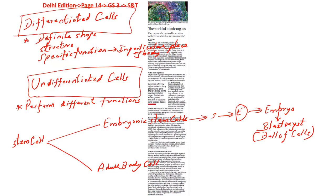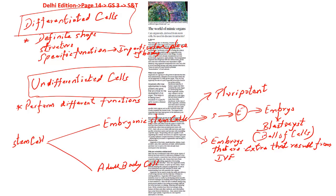Embryonic stem cells come from a blastocyst that is 4 to 5 days old. When scientists take these stem cells from embryos that are usually extra — as a result of in vitro fertilization — these embryonic stem cells are pluripotent. 'Pluri' stands for several and 'potent' stands for ability. A pluripotent cell is one able to effectively perform different tasks and can turn into more than one type of cell. Stem cells can also be extracted from adult body tissues like the brain, bone marrow or skin.